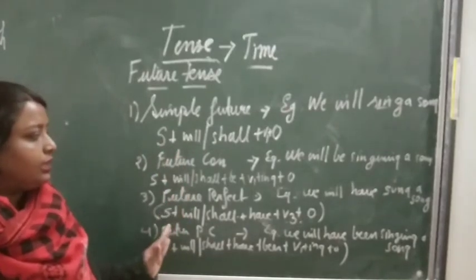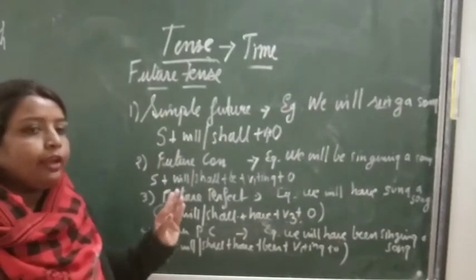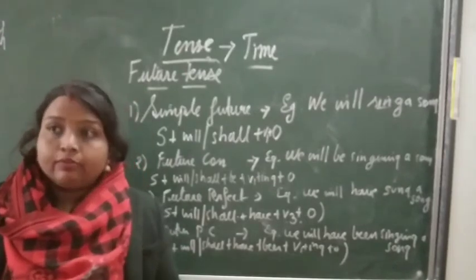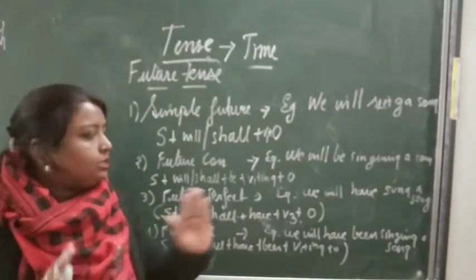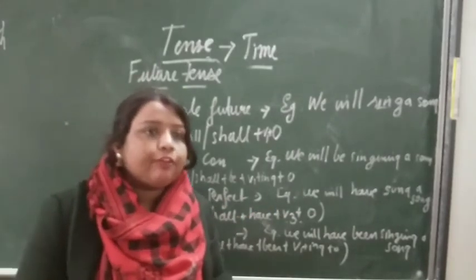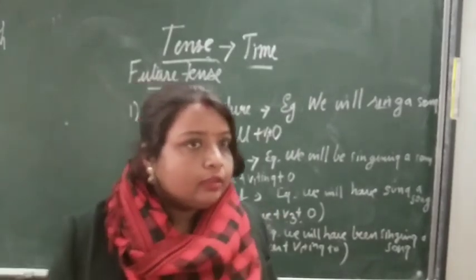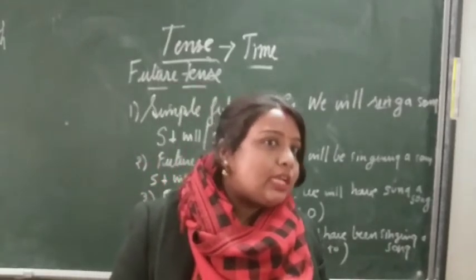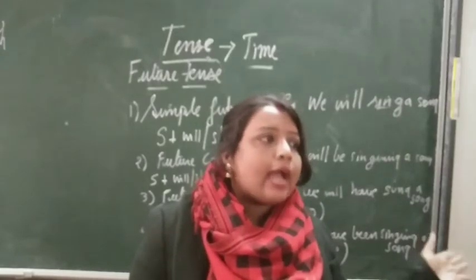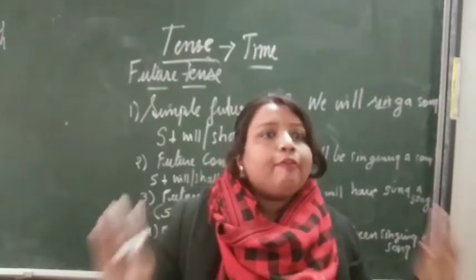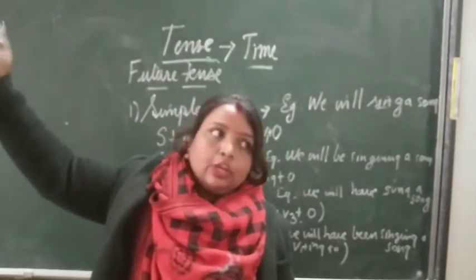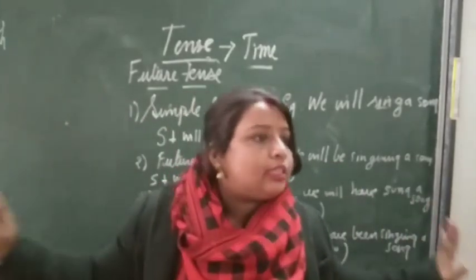Here you will understand one thing: in future, we are not using 'has' — we are only using 'have.' In the perfect form across all three tenses: in past perfect we use 'had.' You make mistakes especially with had, has, and have. When speaking about the past, you have to use 'had' with all persons — he, she, I, we, all.